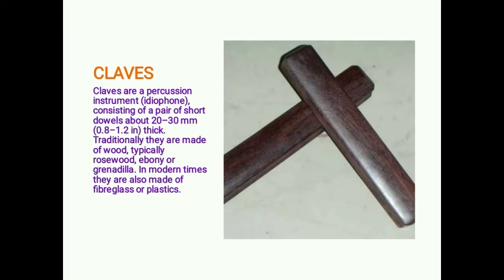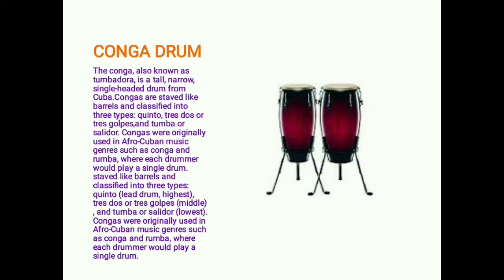Claves are percussion instruments consisting of a pair of short dowels about 20 to 30 millimeters in diameter. Traditionally they are made of wood — typically rosewood, ebony, or grenadilla — though in modern times they are also made of fiberglass or plastic.